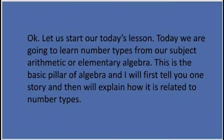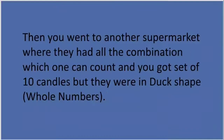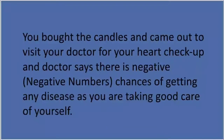I'll tell you a story and then explain how it relates to number types. You are in a supermarket to buy candles for your birthday. You asked the storekeeper for a set of 10 candles, and he said they don't have any set containing zero — that is natural numbers. You went to another supermarket where they had all combinations one can count, and you got a set of 10 duck-shaped candles — that is whole numbers.